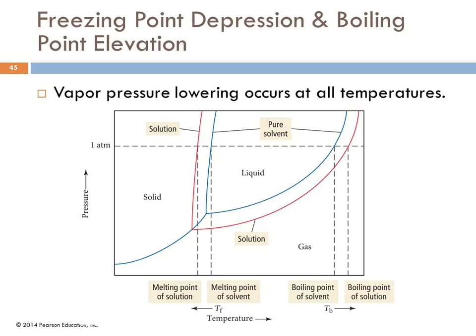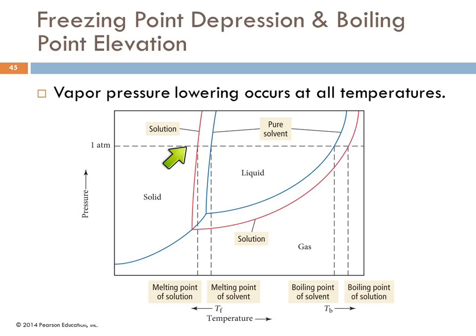Looking at the phase diagram: vapor pressure lowering occurs at all temperatures. Adding a solute lowers the vapor pressure at every temperature, which shifts the melting point lower and the boiling point higher—the solution is liquid over a larger range of temperatures.